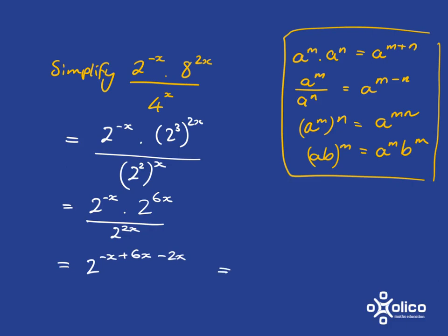And so what we'll have here is 2 to the negative x plus 6x gets me to 5x, subtract 2x gets me to 3x. And that's a perfectly decent answer as is. But you could also note that this is the same as 2 cubed to the power of x. And 2 cubed is 8. So another way of writing this would be 8 to the power of x.